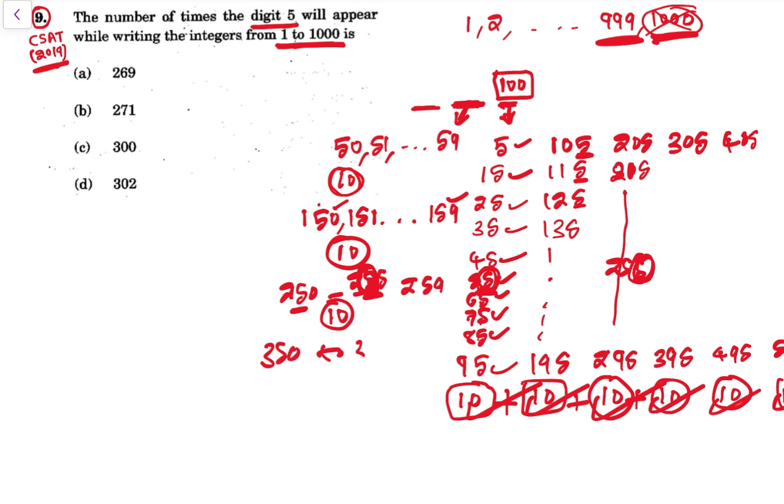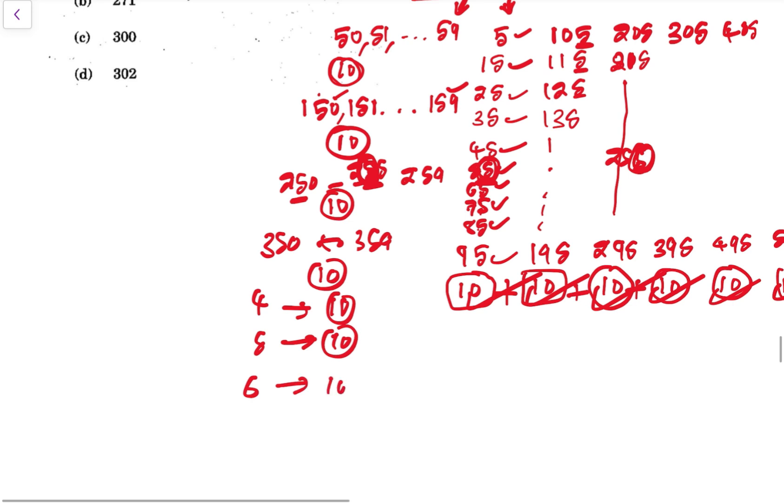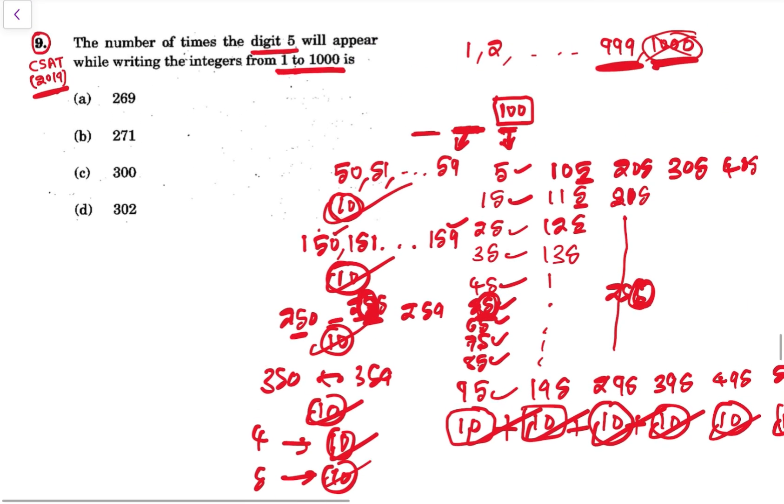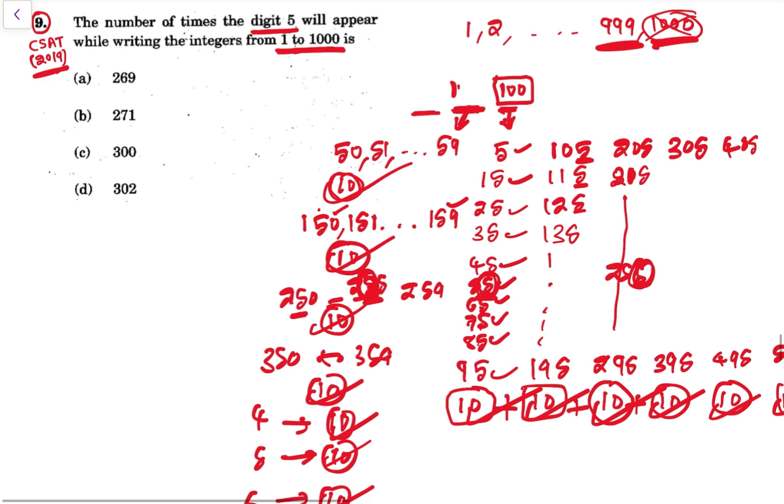Then 250 to 259, 10. Then 350 to 359, 10. Then 450 to 459, 10. Then 550 to 559, 10. Then 650 to 659, 10. Then 750 to 759, 10. Then 850 to 859, 10. And 950 to 959, 10. So total 10 times 10, that is 100. So 100 times.